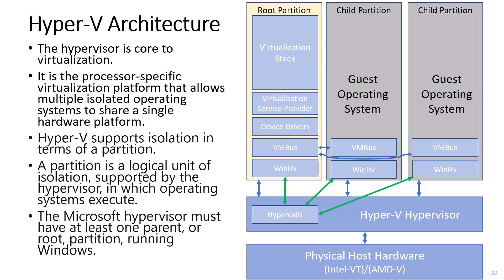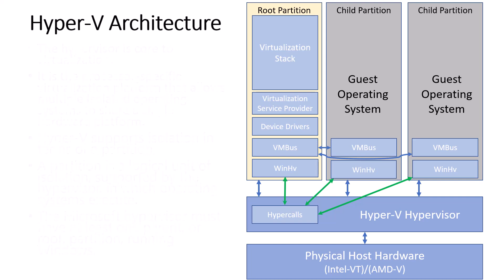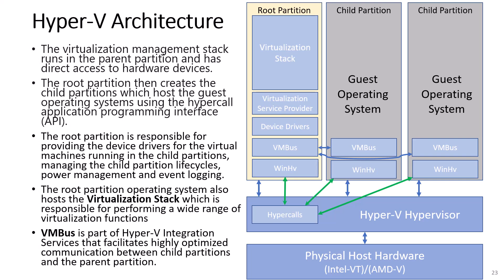The Microsoft Hypervisor must have at least one parent or root partition running Windows. The virtualization management stack runs in the parent partition and has direct access to hardware devices. The root partition then creates child partitions which host the guest operating systems using the Hyper-Call Application Programming Interface, or API. The root partition is responsible for providing device drivers for the virtual machines running in the child partitions, managing the child partitions' life cycles, power management, and event logging.